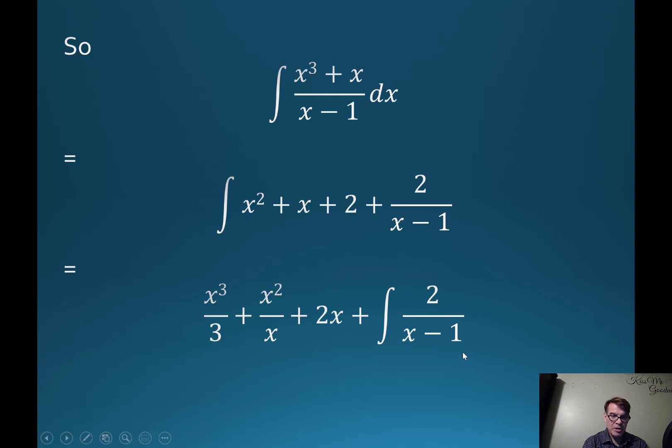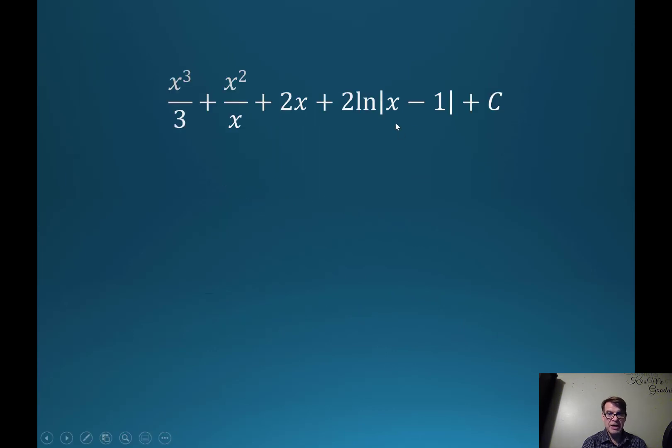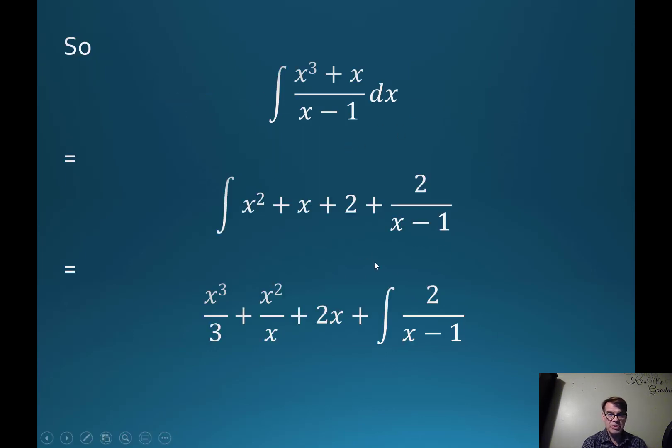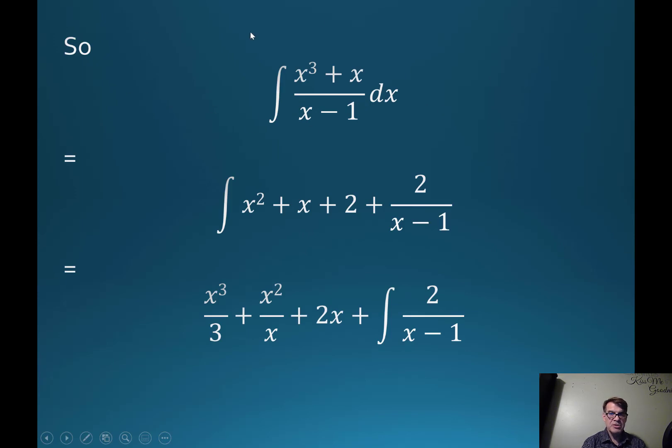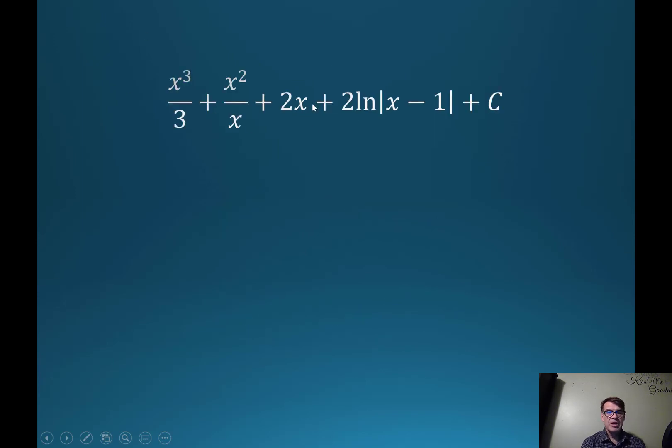What is the integral of this? Well, I've got x minus 1 in the basement here. The integral of 1 over x is the natural log of x, so the integral of 1 over x minus 1 is the natural log of x minus 1, and the 2 stays out front. Here we have the answer to the problem. The derivative of this ends up being this by using partial fractions, and that's how you do it.